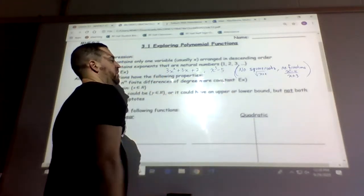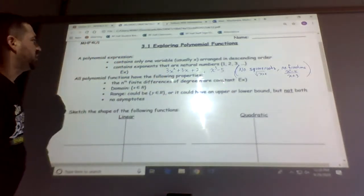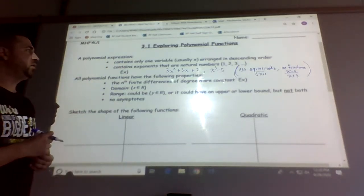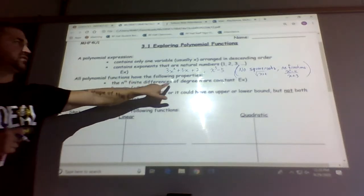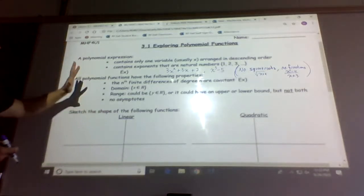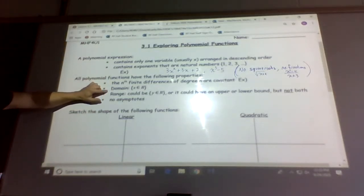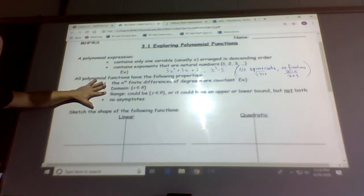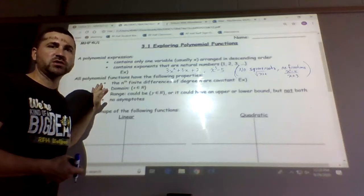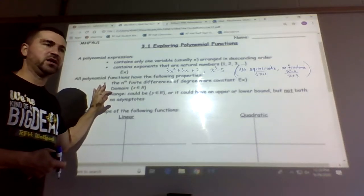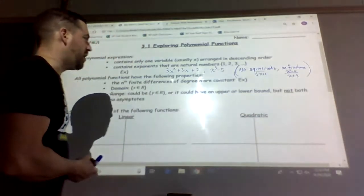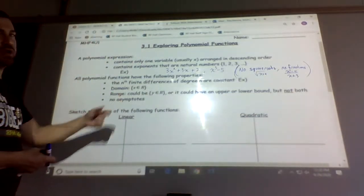Usually one letter, descent in order with regards to the exponents. Then we have polynomial functions have the following properties: the nth finite differences of the degrees are constants. I'll explain what these are. The domain is always x∈R. For polynomial functions, the range could be y∈R or there could be restrictions, just like a quadratic has restrictions on the range. So it usually has a maximum or minimum value, or we say upper or lower bounds, but not both. And there's never any asymptotes.